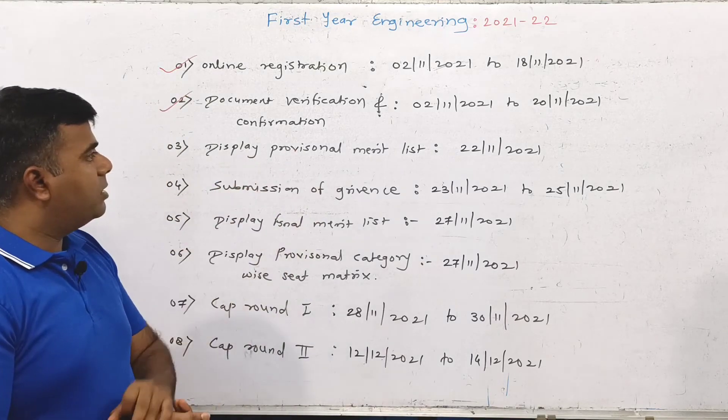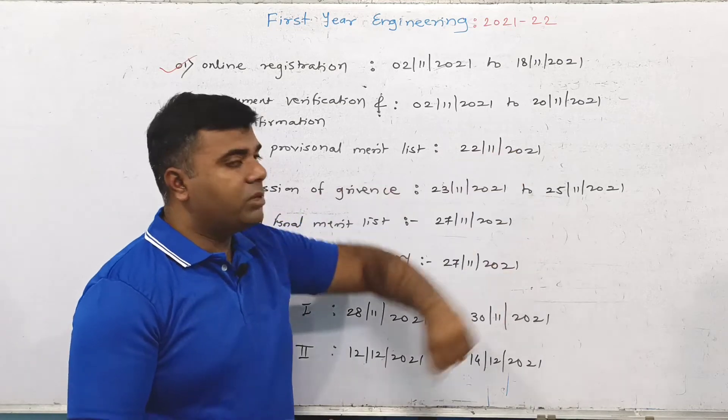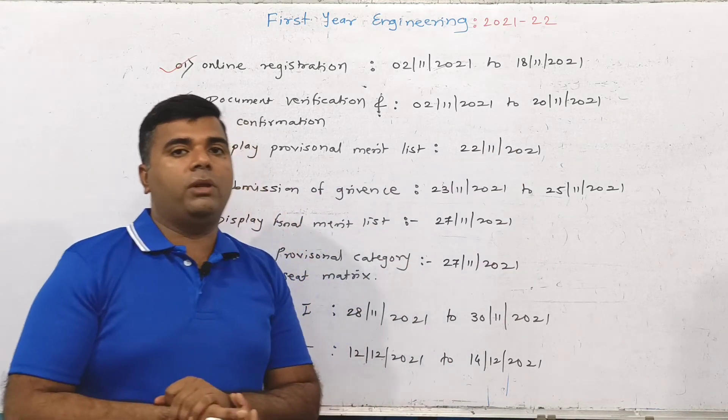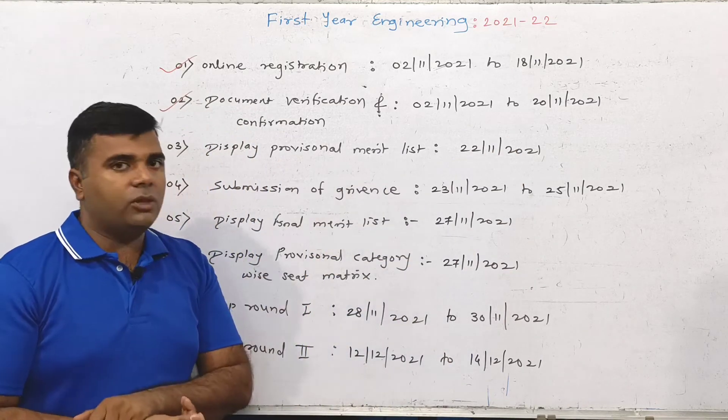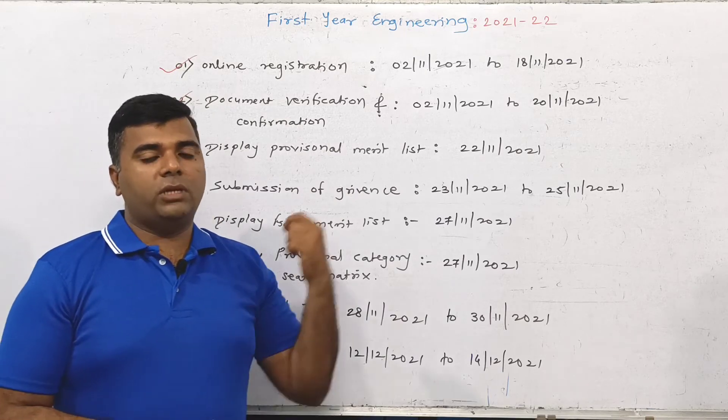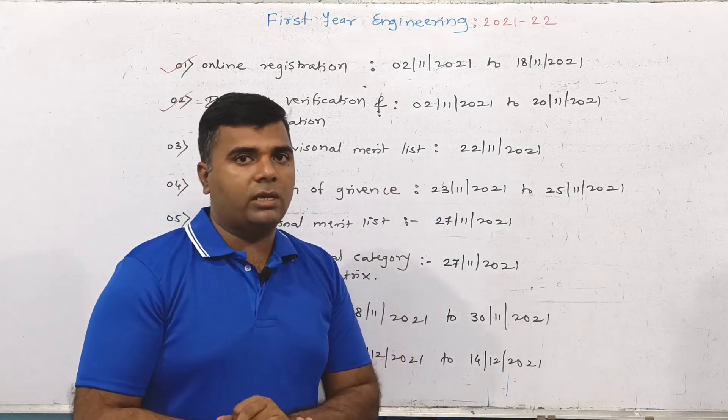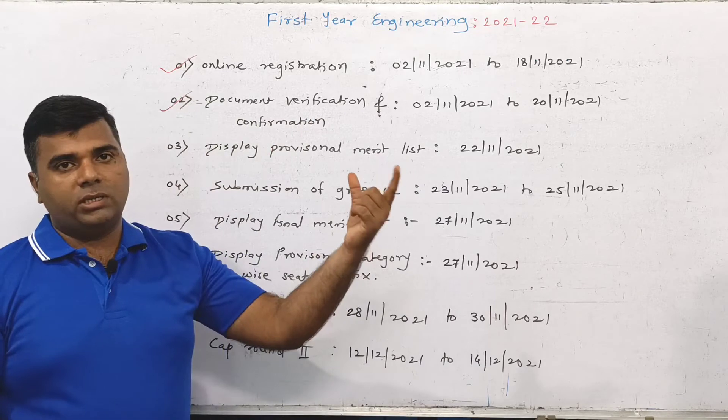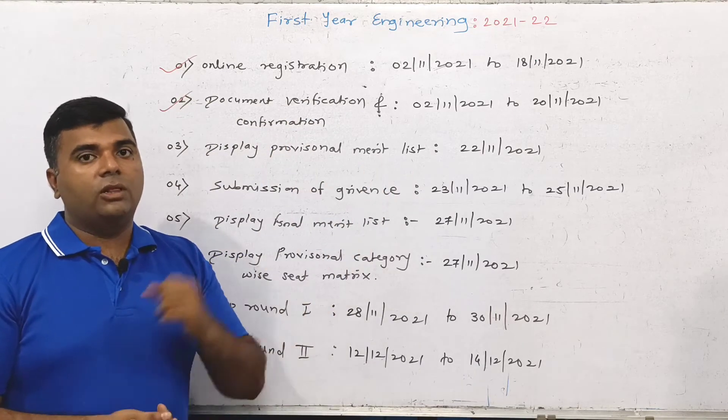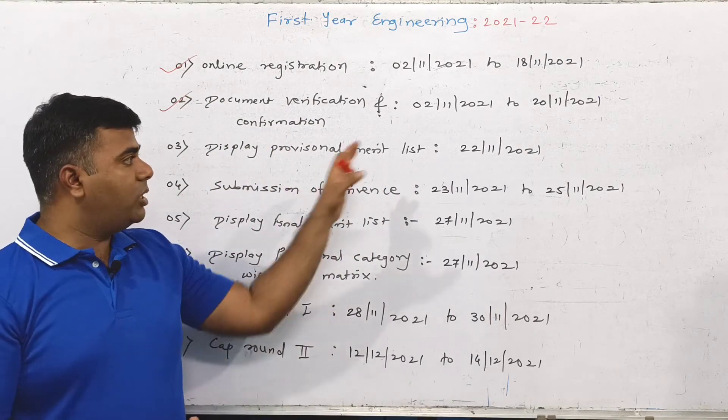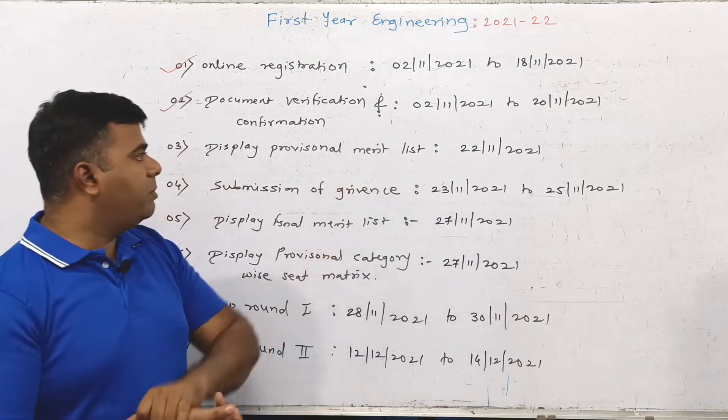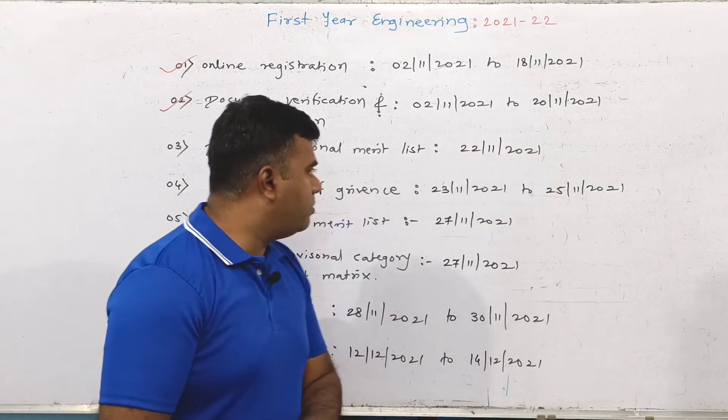The display of the provisional merit list will be on 22nd November 2021. In the provisional merit list, your category and rank will be shown. You can check your rank and category allocation in this merit list.